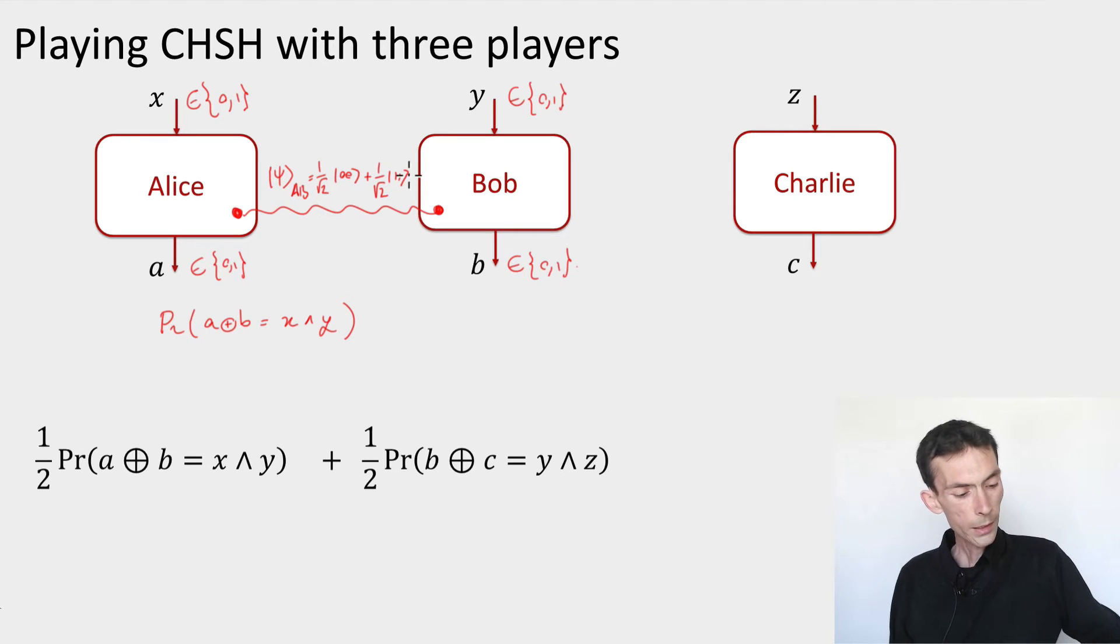then they can achieve these correlations with probability cos squared pi over 8. This was roughly 0.85 and that beats anything that they could do classically without using any entanglement. So that's the CHSH game.